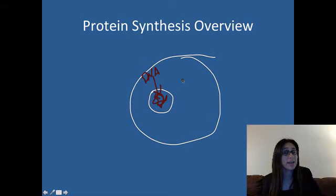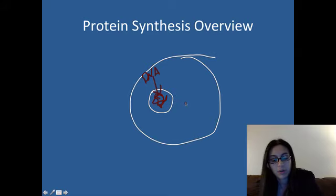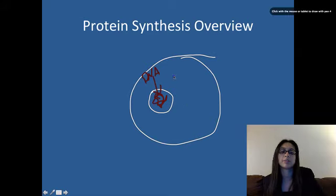Now the place where we make the proteins are the ribosomes out in the cytoplasm. So out here, outside of the nucleus, this jelly-filled space is our cytoplasm. And these are a whole bunch of ribosomes. And these would normally be attached to the rough endoplasmic reticulum. So here's our ribosomes here. This is where we make the proteins.